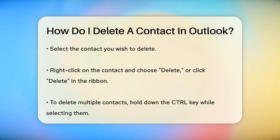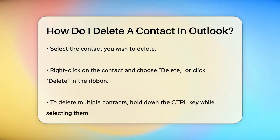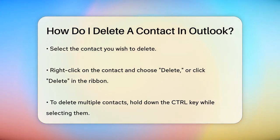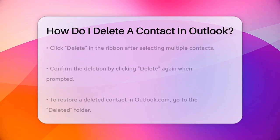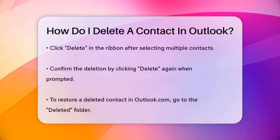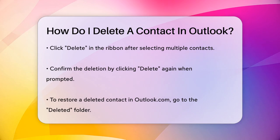To delete the contact, you have a couple of options. You can either right-click on the contact and select Delete, or you can select the contact and then click the Delete button in the ribbon at the top. If you need to delete multiple contacts at once, hold down the Control key while you click each contact to select them, then click Delete in the ribbon.